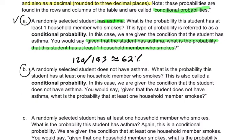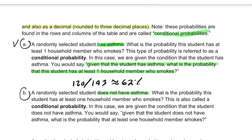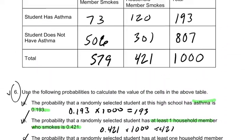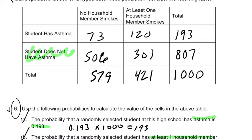Let's go to B. Now, we have a different one. We have selected student does not have asthma. That's our condition. What is the probability the student has at least one household member who smokes? So now we just move to our second row. The condition's here. The student does not have asthma. So we look at this row in total, and that gives us all the information we need. So now it's out of 807.